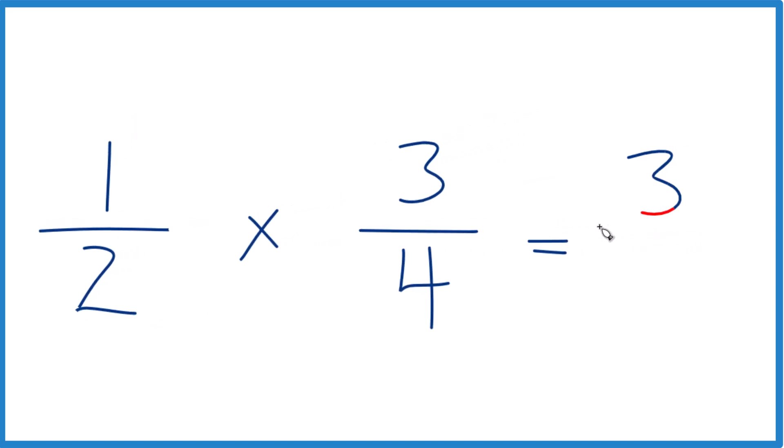One times three is three, two times four is eight, and one half of three fourths, that equals three eighths.